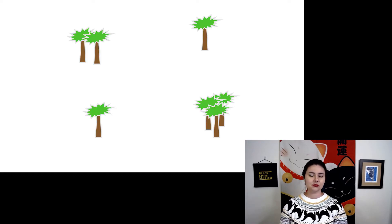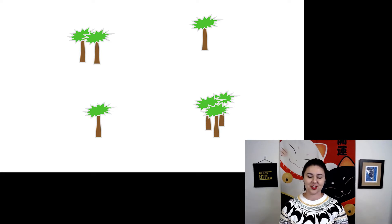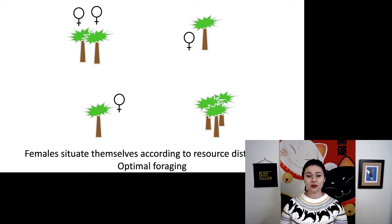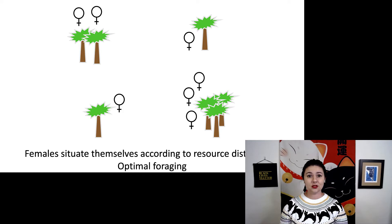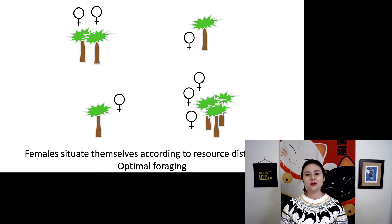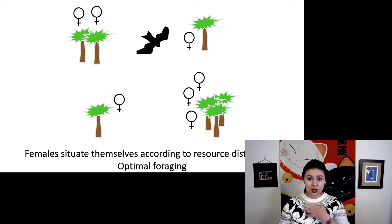Here we have some trees. Let's imagine these are our resources in this environment. First, we have females. Females will situate themselves according to the resource distribution — they're going for optimal foraging. Females want to have babies, in an evolutionary sense, so they need to make sure they have enough food.